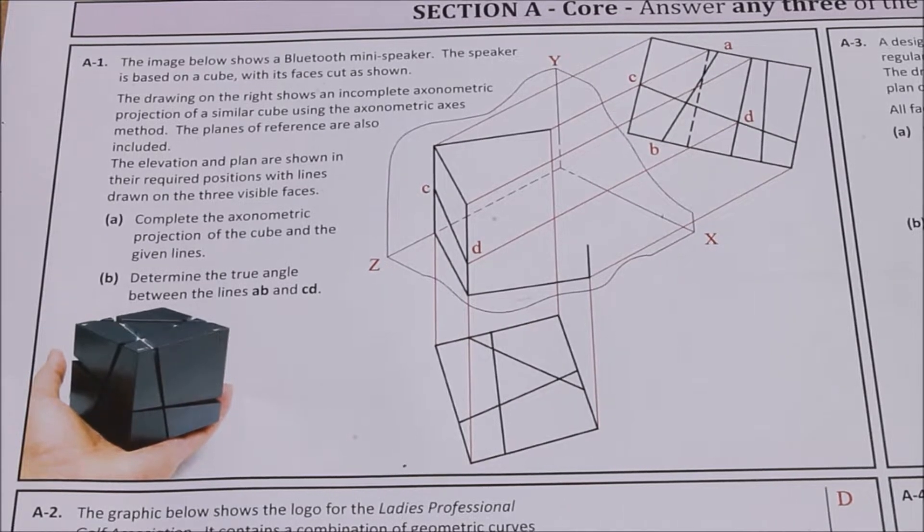The image below shows a Bluetooth mini speaker. The speaker is based on a cube with its faces cut as shown. The drawing on the right shows an incomplete axonometric projection of a similar cube using the axonometric axis method. The planes of reference are also included. The elevation and plan are shown in the required positions where the lines are drawn in the three visible faces.